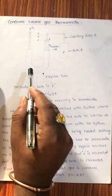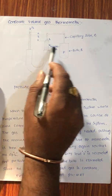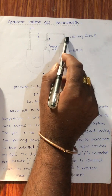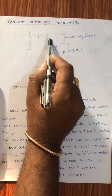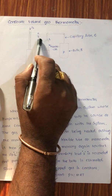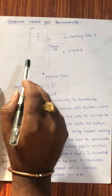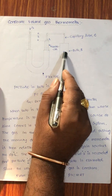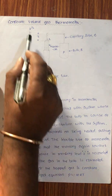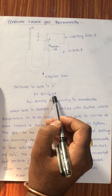This is the flexible limb, this is the manometer, this is the bulb, and this is the capillary tube. This is the lip L, the difference in manometer level Z, and P₀ is the atmospheric pressure. Now, pressure in the bulb P is equal to P₀ plus ρgZ.